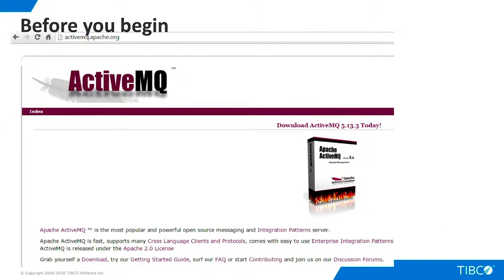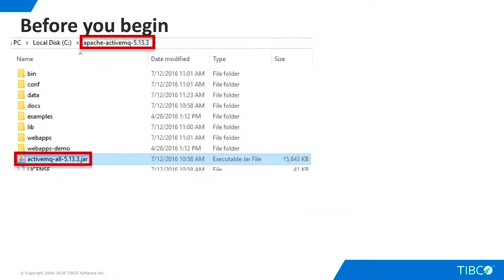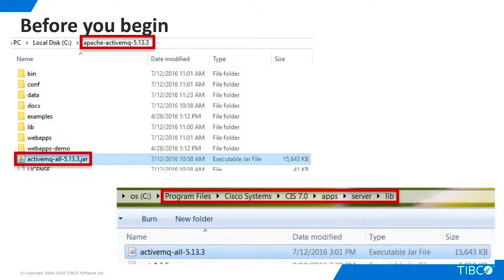Begin by going to activemq.apache.org and learning about ActiveMQ. ActiveMQ is a very rich and sophisticated product, and we can only scratch its surface in this brief demo. You can download ActiveMQ from this site and install it — installation is very simple; just extract the download to a directory of your choice. One installation note is that you should set your Java Home Environment variable to the location of your JDK. Copy the ActiveMQ JAR file from the top-level installation directory and paste it into the apps server lib directory of the TDV installation folder.